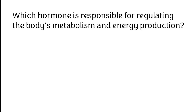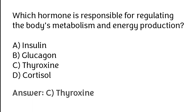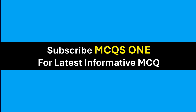Which hormone is responsible for regulating the body's metabolism and energy production? Insulin, glucagon, thyroxine, cortisol. The correct answer is option C: thyroxine hormone is responsible for regulating the body's metabolism and energy production. Thanks for watching, subscribe to MCQs 1 for latest informative MCQs.